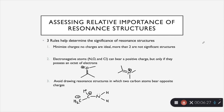Now that we know how to identify resonance and draw correct resonance structures, we need to take all of the resonance structures we've drawn and assess their relative importance — which one is the more important structure? There are three rules to help determine significance. The first rule says to minimize charges: if you have multiple resonance structures, the more significant one is going to be the one with fewer charges. More than two charges in one single molecule is not going to be a significant structure. The next rule says that electronegative atoms such as nitrogen, oxygen, and chlorine can bear a positive charge, but only if they possess an octet of electrons.